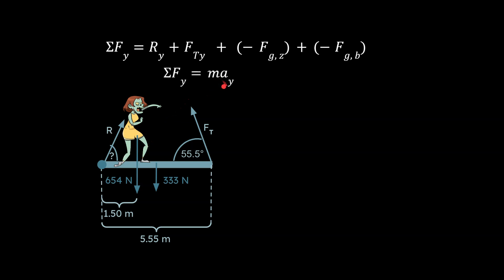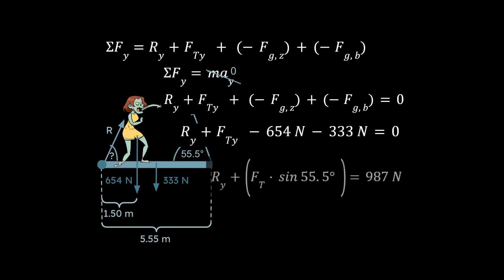And we know that there's no acceleration here. So the second line of the sum of the forces strategy is MA in the Y. But that's going to be zero. So we can set these equal to each other. And what happens is you end up with this. Let's think about what we know and what we don't know. Really the only unknown at this point is going to be R in the Y. So we can go ahead and start to isolate for that, plug in our numbers, and we've solved for R in the Y.